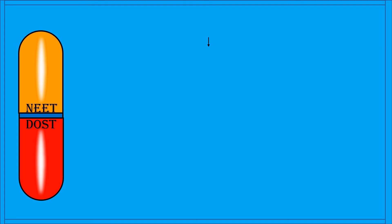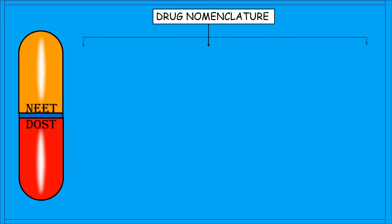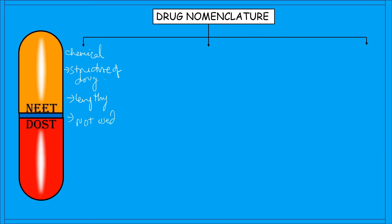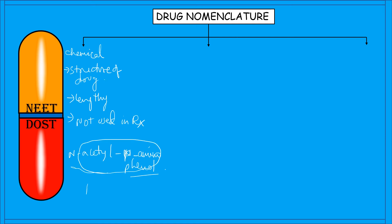Now let us discuss drug nomenclature, where there are three names given to a drug. The first is the chemical name, which is given based on the structure of the drug. The chemical name is too lengthy to write or prescribe for a patient and is usually not used in prescriptions. For example, the chemical name of paracetamol is N-acetyl-para-aminophenol.